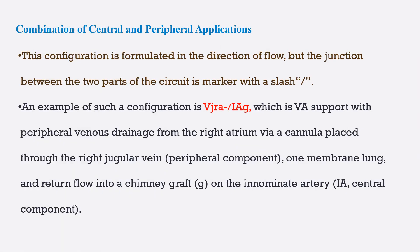Sometimes central and peripheral application can be combined together. This configuration is formulated in the direction of blood flow, but the junction between the two parts of the circuit is marked with a slash. For example, VJ/RA or IJ/GA represents VA ECMO support with peripheral venous drainage from the right atrium through a cannula placed via the right internal jugular — the peripheral component — one membrane lung, and return of flow into a chimney graft on the innominate artery — the central component.